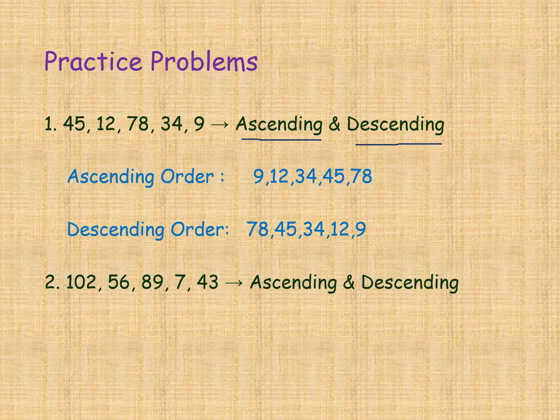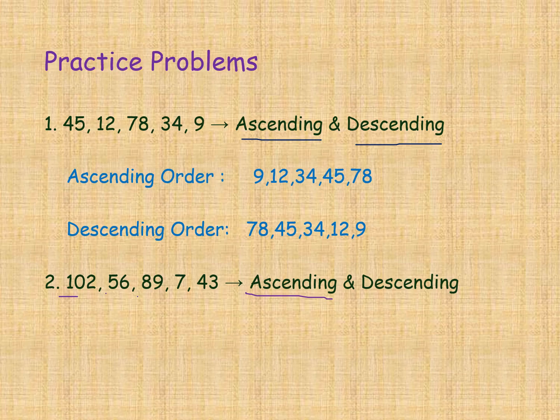In these five numbers, first we should write ascending order. Here 102 has a hundreds place, but 56 has no hundreds place — that means zero. Here also no hundreds place means zero. And 7 has no tens and no hundreds — zero, zero. Here also no hundreds means zero. We compare hundreds places first. The single digit 7 is the smallest, so this is the first one.